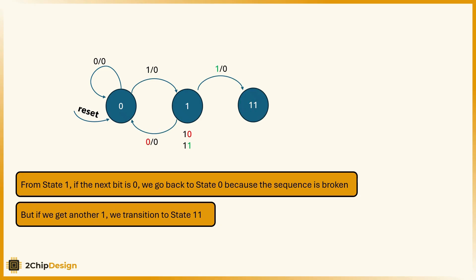From state 1, if the next bit is 0, we go back to state 0 because the sequence is broken. But if we get another 1, we transition to state 11.